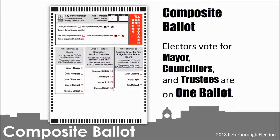Electors are given one ballot that matches their options for ward councillors and school board trustees. For example, a Ward 1 resident can receive one of four ballot faces depending upon their school support. They could be a Ward 1 supporter of the English public board, Ward 1 supporter of the French public board, or Ward 1 supporter of the French separate board.